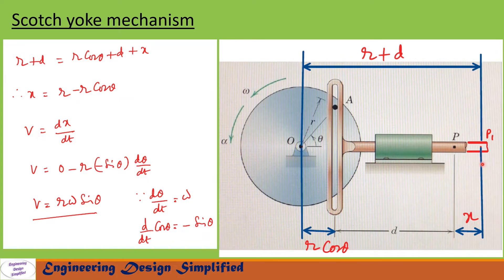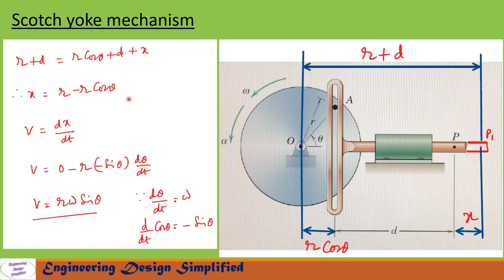The position change, that is the displacement of point P, can be written as x. This x distance can be calculated by substituting this distance: d plus r·cosθ, which is the component of r along this direction. So we write: r + d = r·cosθ + d + x. From this equation, x can be written as x = r − r·cosθ, since d and d cancel. This is the equation to find the displacement of point P on this slider.